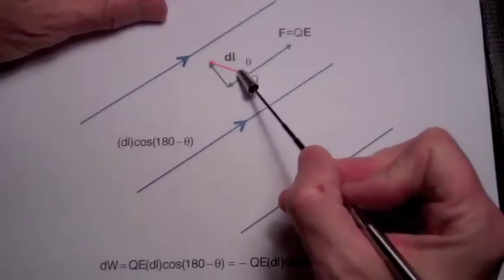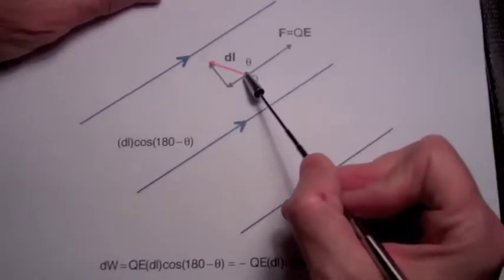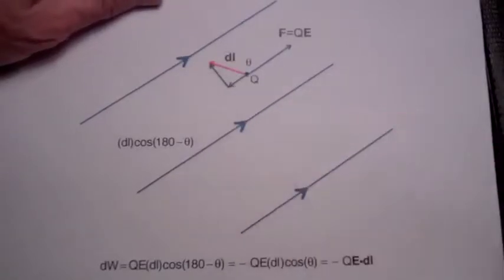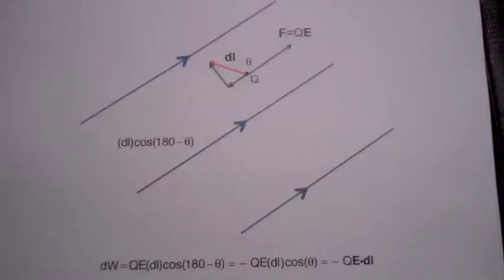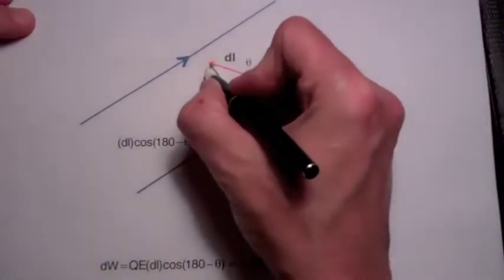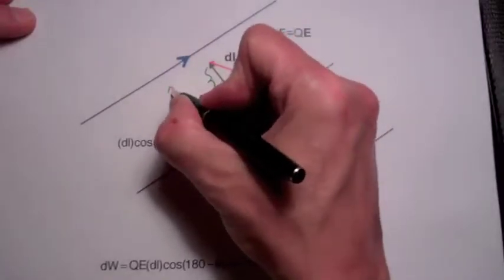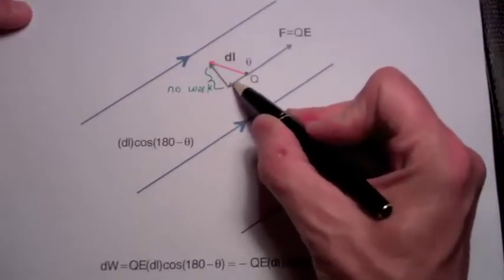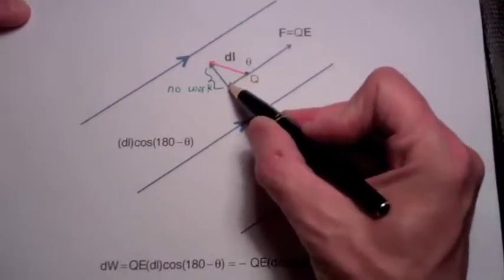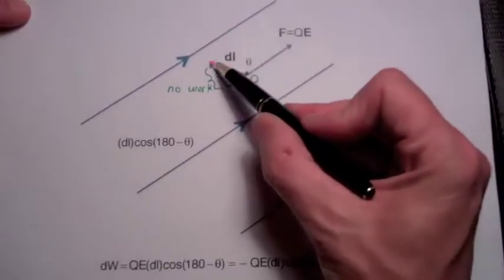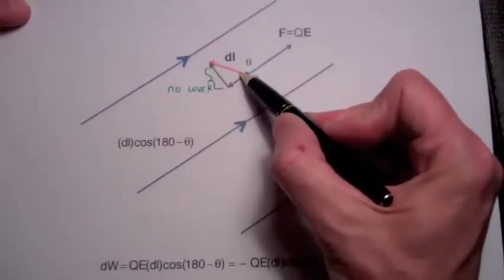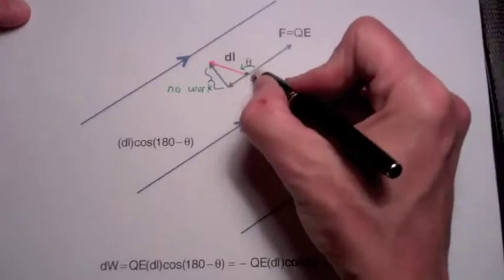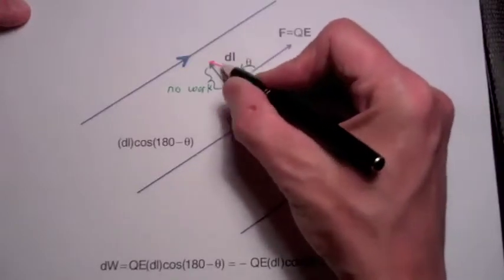Now, I can think of this displacement DL as two displacements: one directly against the electric field and one perpendicular to the electric field. When we move perpendicular to the electric field, as we discussed earlier, we are doing no work. So all the work that is occurring is along this displacement right here. And this distance will be D sub L times the cosine of this angle here, which is 180 degrees minus theta, where theta is the angle between the electric field and our actual displacement.